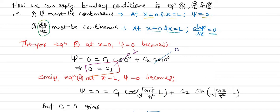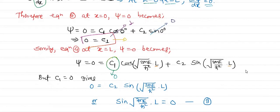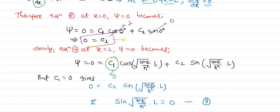Substituting C₁ = 0 into equation 4 evaluated at x = L, we get C₂sin(√(2mE/ℏ²)·L) = 0. Since C₂ cannot be zero (that would give a trivial solution), we have: sin(√(2mE/ℏ²)·L) = 0. This is equation number 9.